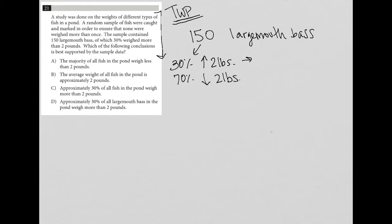This might be overkill, but it shows the information that can be extracted from questions like this. If 30 percent - 30 percent of what? 30 percent of the 150. So 150 times 0.3, that's 45. So 45 largemouth bass are two pounds or higher, which means the remaining 105 bass are less than two pounds, since 105 plus 45 gives us 150.